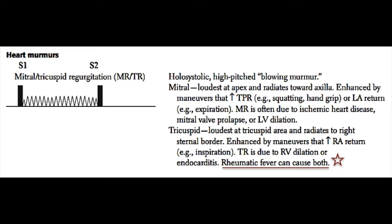Mitral regurgitation is a holosystolic murmur and is a high-pitched blowing murmur. It occurs loudest at the apex of the heart at the mitral valve listening post, and this murmur will radiate towards the axilla. You will hear this murmur loudest at the apex of the heart, but less loudly in the axilla or the armpit. This murmur is enhanced by maneuvers that increase total peripheral resistance, for example squatting or hand grip exercises, or increased left atrial return, for example expiration.